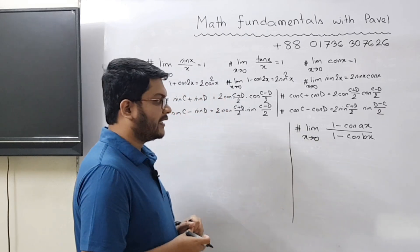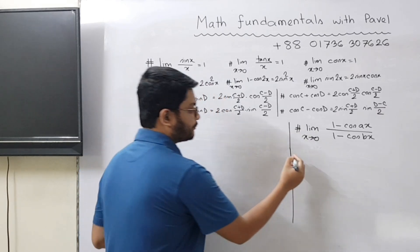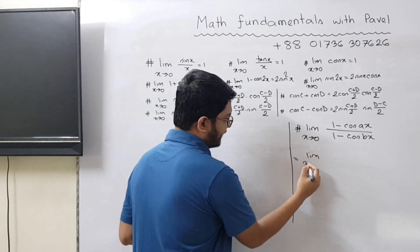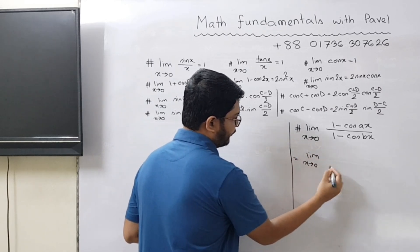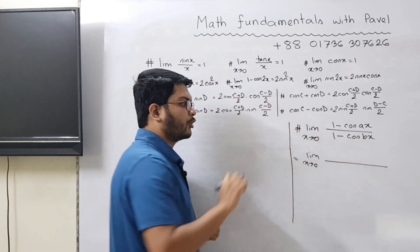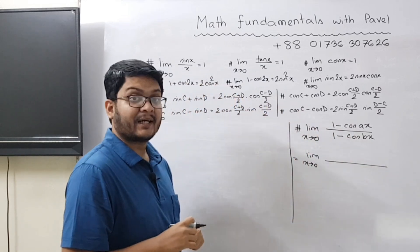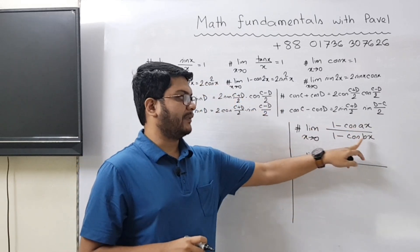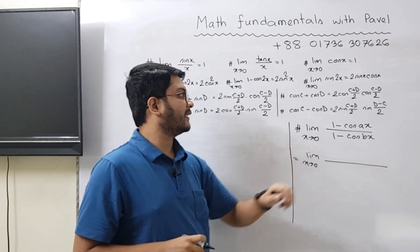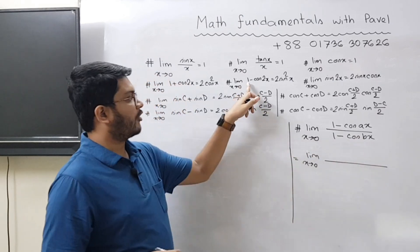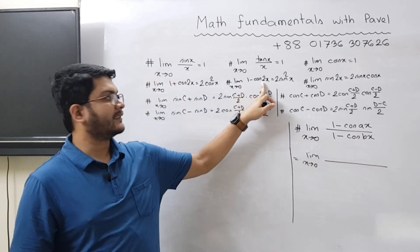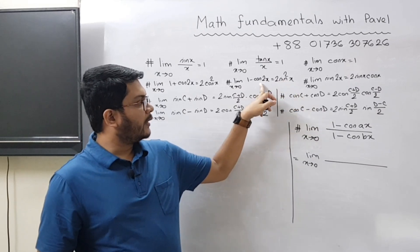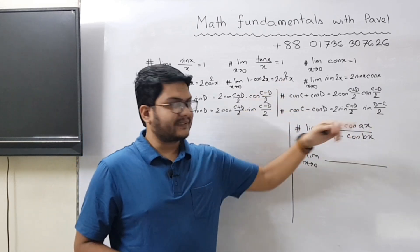So let's see what we are doing. First of all, we will convert this expression. We have (1 - cos ax) divided by (1 - cos bx). Look at this formula: 1 - cos y is equal to 2 sin squared (y/2).